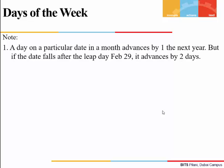There are a few things we should note. A day on a particular date advances by one the next year, but if the date falls after the leap day — that is, after 29th February — then it advances by two days.